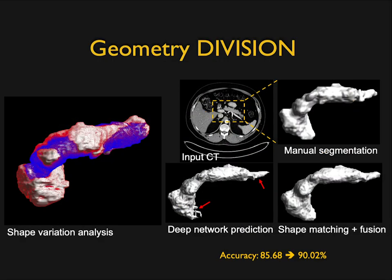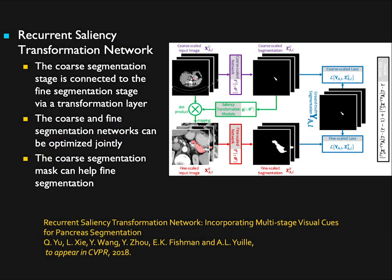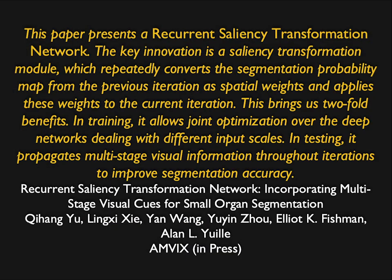We also look at shape and geometry, which is important for detecting lesions by the uncinate and tail of the pancreas. We developed this recurrent saliency transformation network. The coarse segmentation stage is connected to the fine segmentation by a transformation layer, and the coarse and fine segmentation networks can be optimized jointly. This allows for multi-stage visual information throughout iterations to improve segmentation accuracy, and we're continuing to develop along those lines.